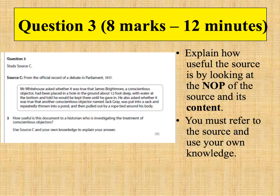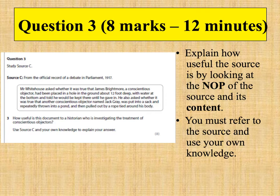You need to say something about the NOP of the source and whether it's useful. For example, you might conclude that a source is biased and therefore less useful, or if the nature of the source is a photo, it might be less useful because it doesn't give us the whole picture. Next, analyse the content — what information does the source actually give us? You might quote from the source. But you also need to use detailed own knowledge to consider what information is not in the source, and argue that the source is less useful because it doesn't give the whole story.